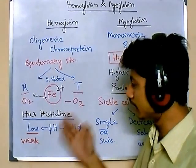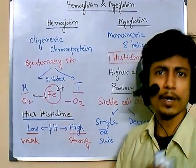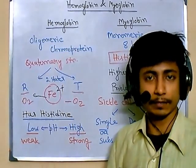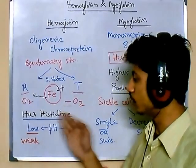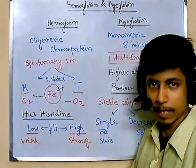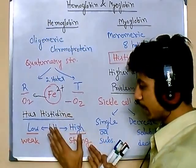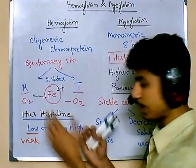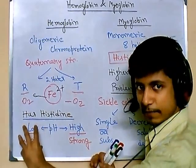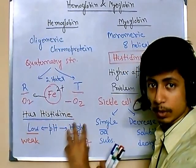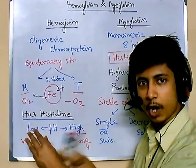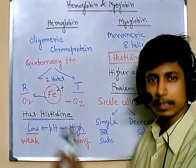Hemoglobin tends to have more histidine residues because histidine imparts a buffering system to hemoglobin, which is very important since one of blood's key tasks is to maintain blood pH. If the pH of the solution is low, hemoglobin will bind oxygen with very low affinity. If the pH is higher, it has a stronger affinity towards oxygen. So at low blood pH, hemoglobin tends to release bound oxygen; at higher pH, it binds oxygen again.